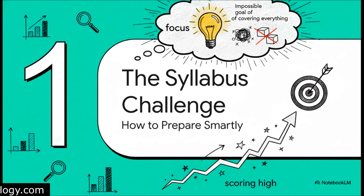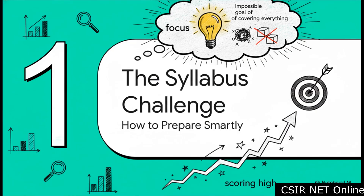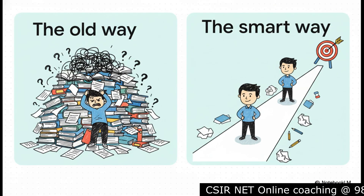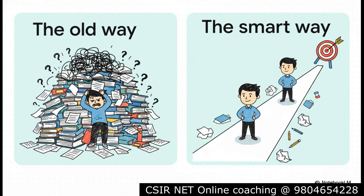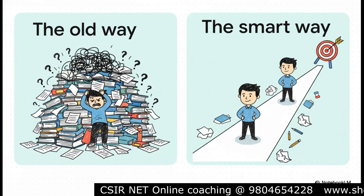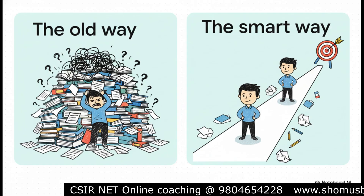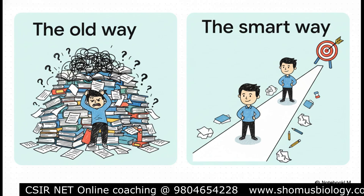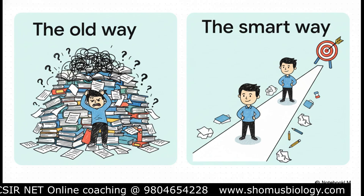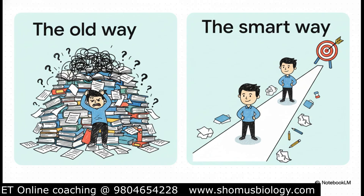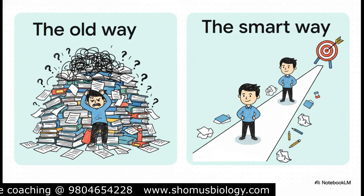The very first step to conquering Unit 8 isn't about opening a book — it's a mental shift. We've got to get away from the impossible idea of 'I have to cover everything' and move to a smarter goal: focusing on what actually matters for getting a high score. The old approach? That's a recipe for burnout — trying to do everything, feeling overwhelmed, wasting time. But the smart approach is about working with focus and precision. For a competitive exam like CSIR NET, this isn't just a better way to study, it's really the only way to study effectively.